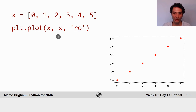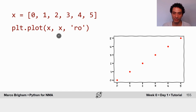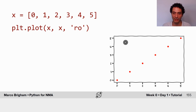You just have to make sure that the first two arguments — what I named x and y — have the same number of elements. In this case I'm plotting x twice, so I get a straight line, and the dots represent the values of my list.